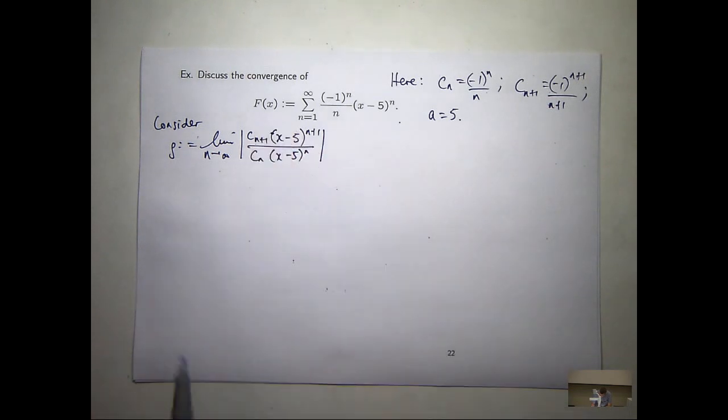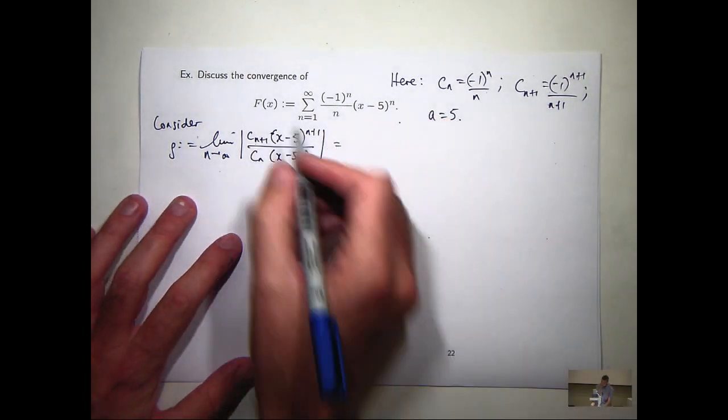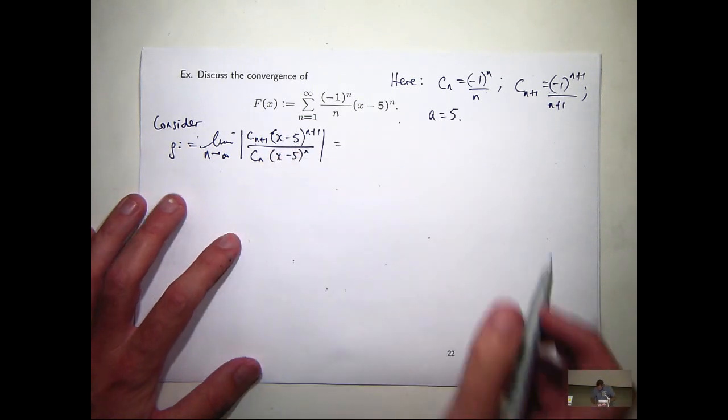In fact, some of you may want to skip this step. I'm going to cancel off here. I'm just going to have an absolute x minus 5 left.